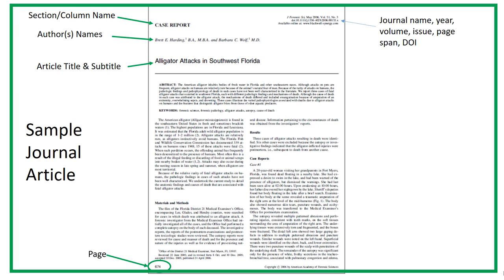Journals are professional publications and usually provide more in-depth information. This is the first page of a journal article, which often has all the citation elements, but some are difficult to locate or may be in small print. This article has several authors, and their degrees are provided for each author, and often their institution affiliation is provided. Remember to include the author's full names in the author element as previously instructed, but no titles, degrees, positions, or affiliations are included in the citation.